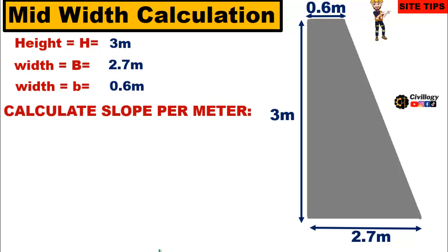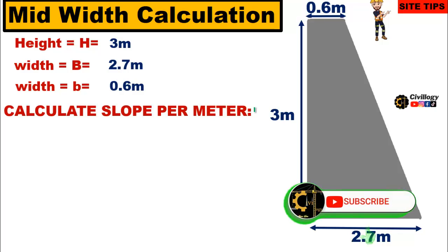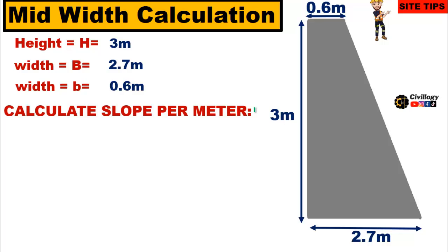We want to calculate the slope per meter because the height of the retaining wall is too high — the concrete cannot be poured at once. You will have to make the formwork for each 1 meter or less, because it is PCC concrete and for PCC concrete we need to erect the formwork. Formwork cannot be erected for more than 1 meter height, and it is also not permissible to pour the concrete more than 1 meter height.